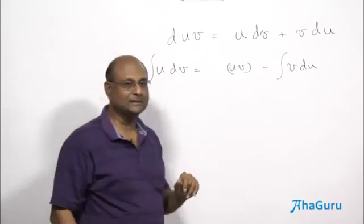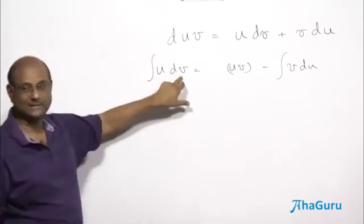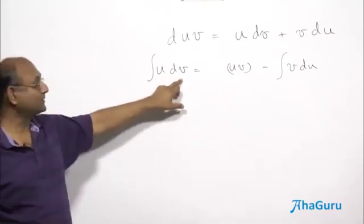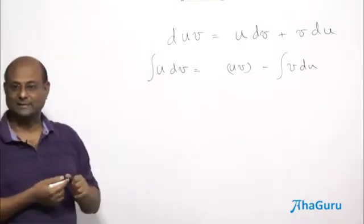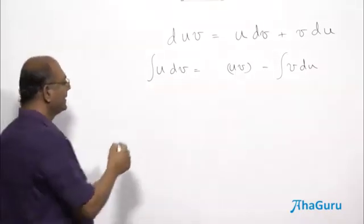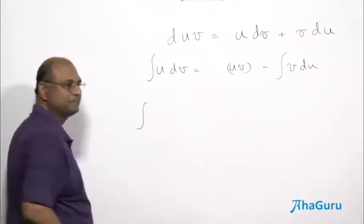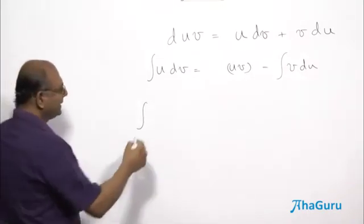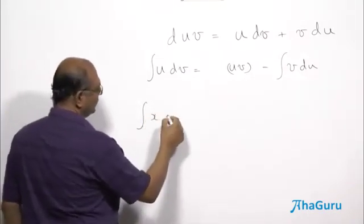Now in certain situations, this DV is the same as X. But in other cases, actually this DV won't be hanging around like that. Let's take an example. So suppose I want to do, let's say integral X cos X DX.